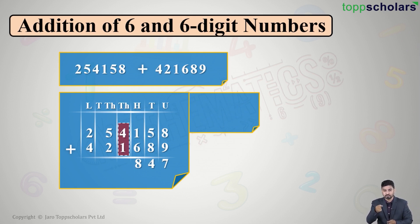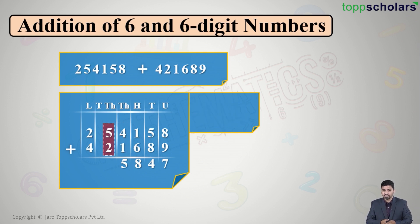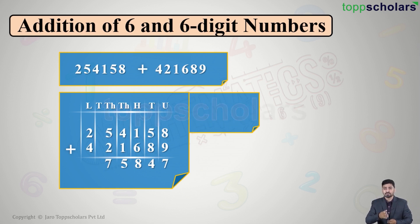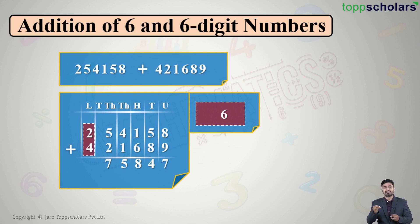In the thousands column we have four plus one, the answer is five — a single digit, so we write it directly. Next is the ten thousands column: five plus two equals seven, again single digit, written directly. In the lakh column, two plus four equals six, a single digit, written directly.